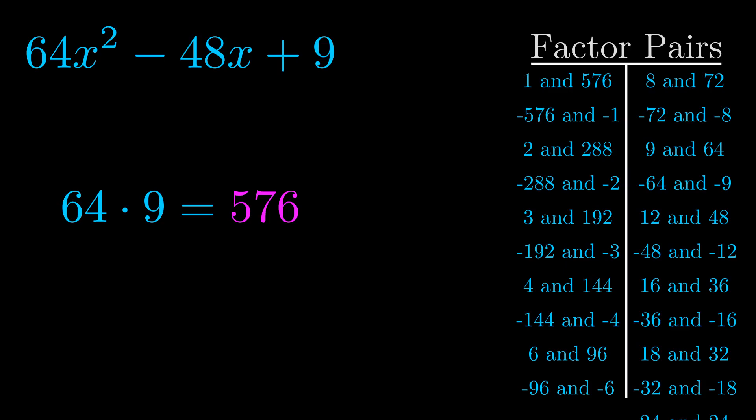The b value is the coefficient on the x term. That's the middle term, the one that we haven't done anything with yet. And really this is the only factor pair that we need.